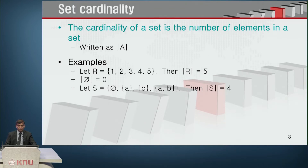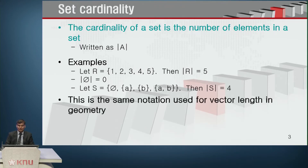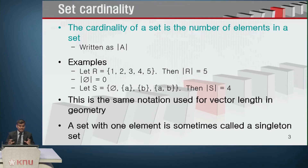Here we have a set S which has the null set as an element, a set that has character A as an element, a set that has B as an element, and a set that has A and B as elements. So the cardinality of S is 4. This is the same notion used for vector length in geometry. A set with one element is sometimes called a singleton set.